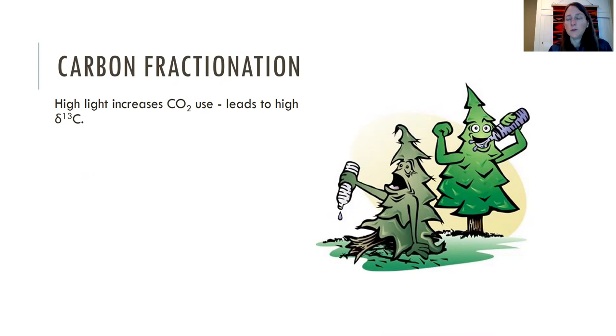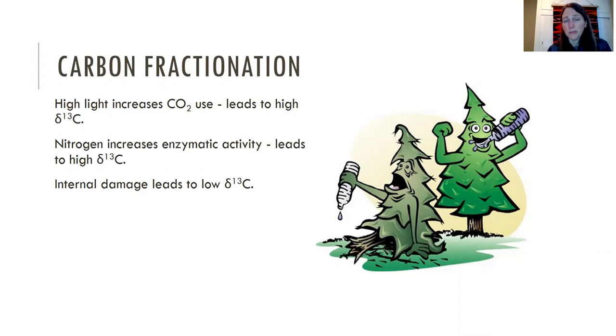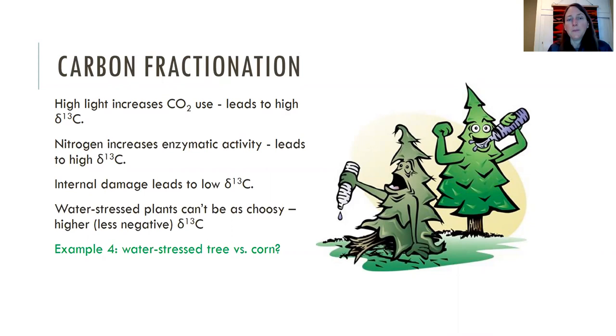Another thing is that carbon isotopes fractionate because of water use and light. So high light increases CO2 use, which can lead to higher or less negative delta C13. Nitrogen also increases enzymatic activity, which can lead to higher or less negative C13. Internal damage to a plant can actually cause lower C13 values, and water stress—plants can't be as choosy, and so they end up with higher or less negative C13 values.